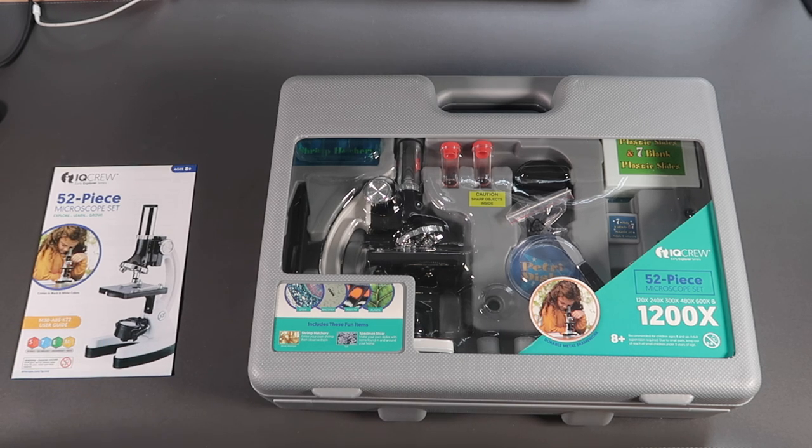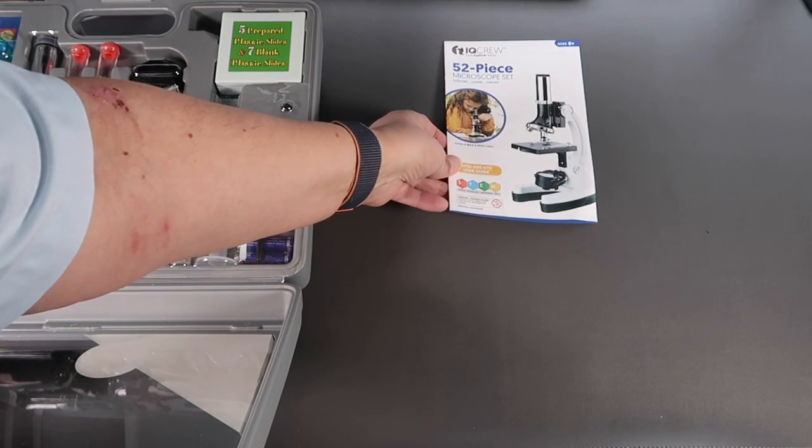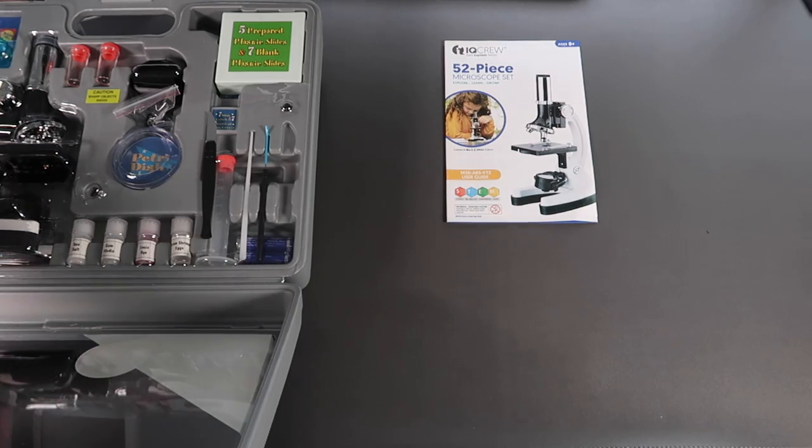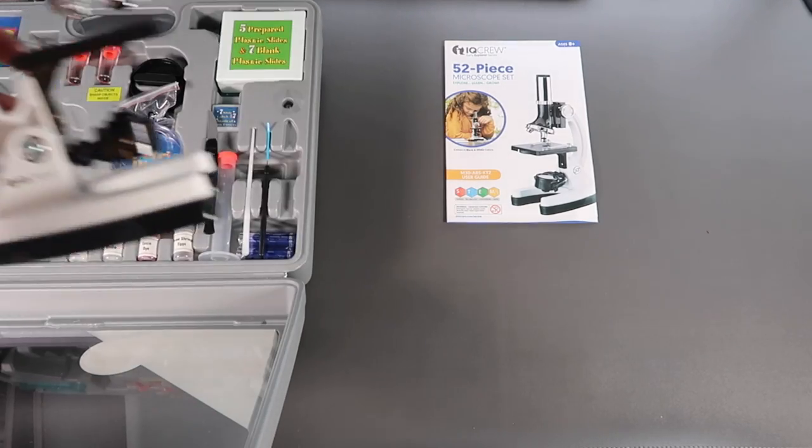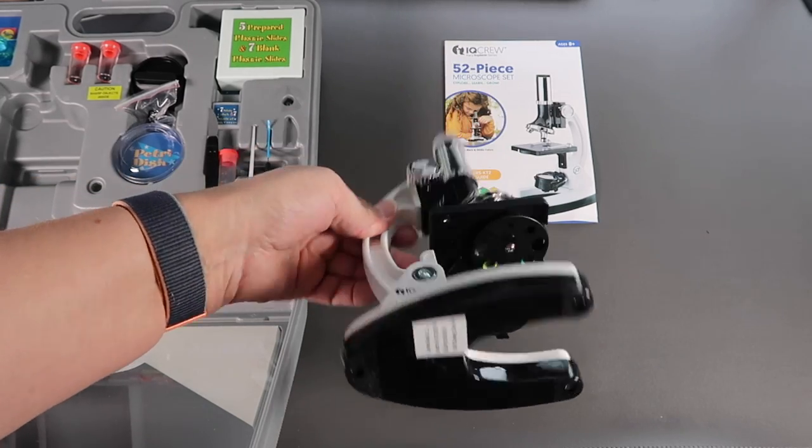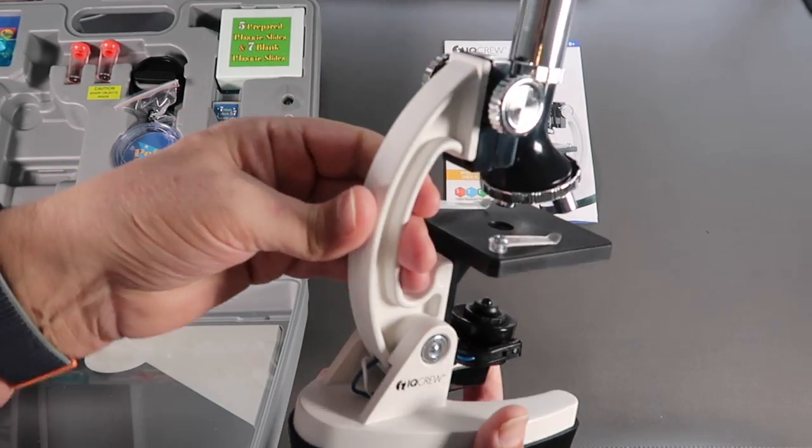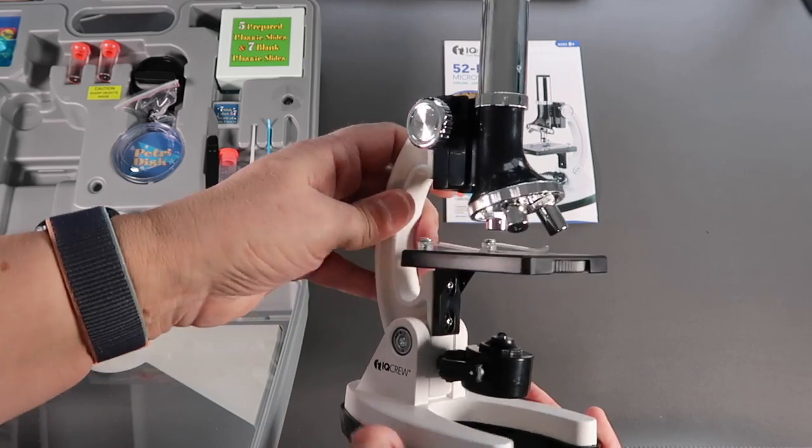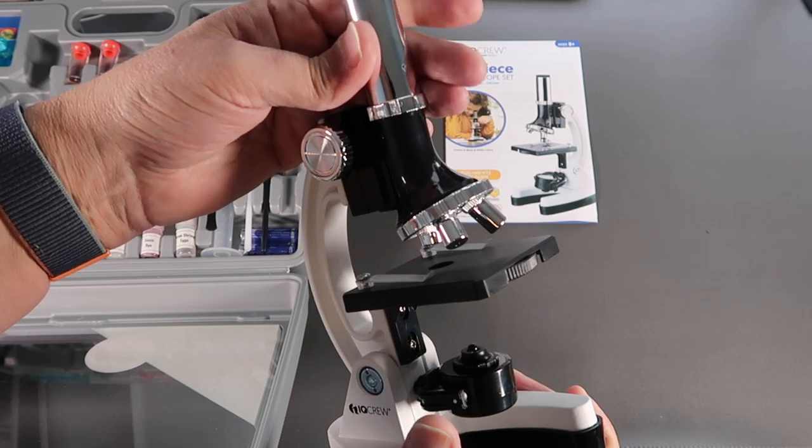Let's take a look at the components individually. The microscope itself. It's a little smaller than I thought. I'm not entirely sure what it's made of. I don't think it's metal. I think it's a hard plastic, but it's pretty solid, pretty durable. I don't think this is going to break.